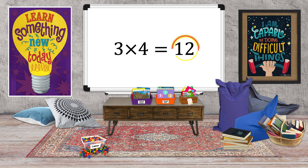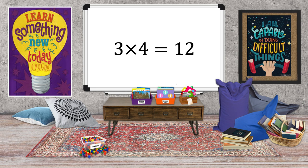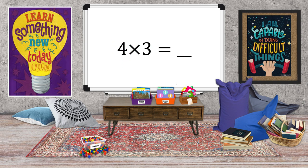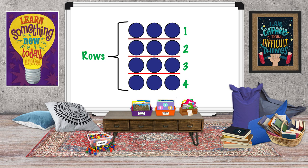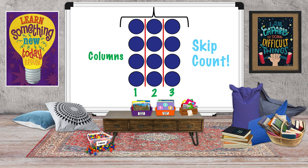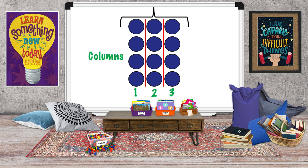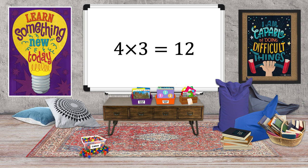But what happens if we flip the order of the factors — will the answer change? Let's try it using an array. We started with three times four equals twelve. Let's flip the factors: four times three equals blank. What does that look like as an array? The first number is the number of rows — four rows. The second number tells us how many columns — three columns. Our array looks like this: four rows, three columns. Let's skip count to find our product: three, six, nine, twelve. Four times three equals twelve. So three times four equals twelve, and four times three equals twelve.